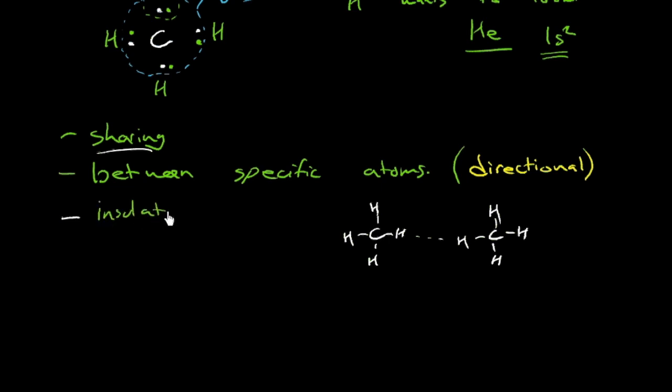And the class of materials that's characterized most clearly by covalent bonding is a polymer. Now, there are covalent ceramics as well. But typically, the best example of covalent material is a polymer.